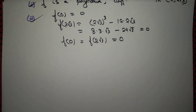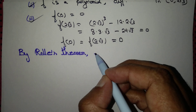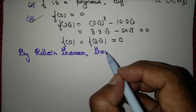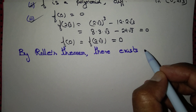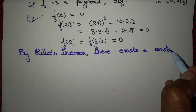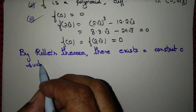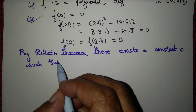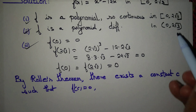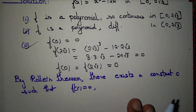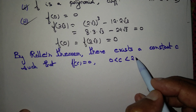By Rolle's theorem, there exists a constant c such that f'(c) = 0, where c belongs to the open interval (0, 2√3), that is c is greater than 0 and less than 2√3.